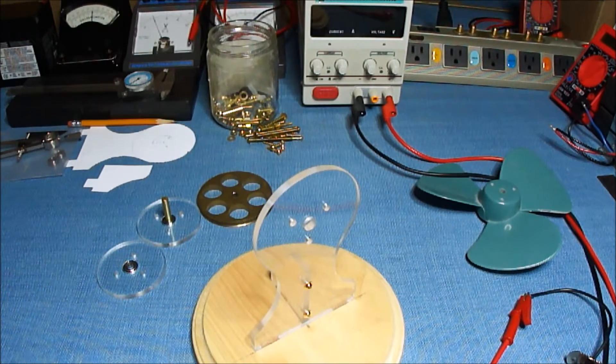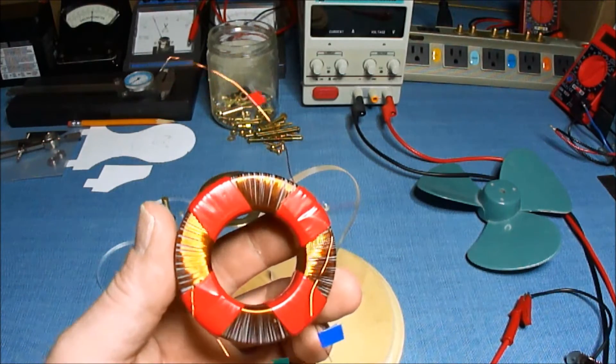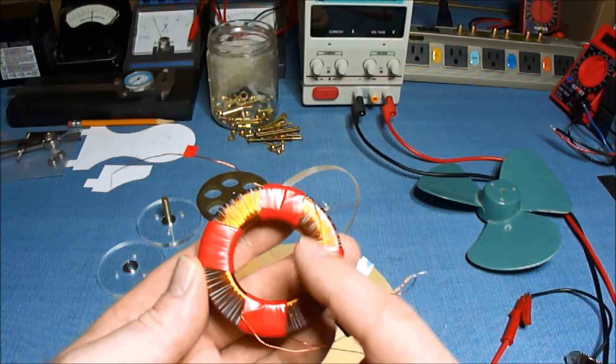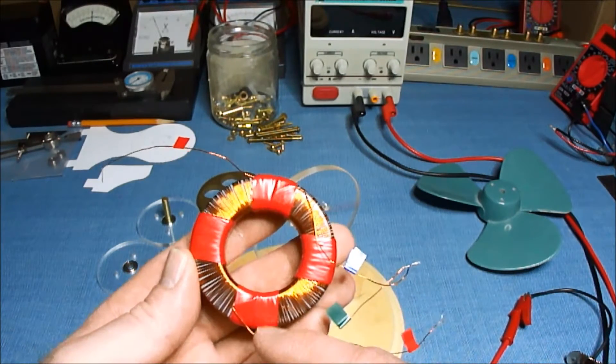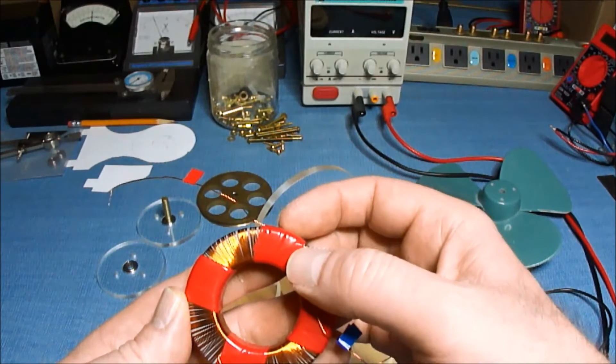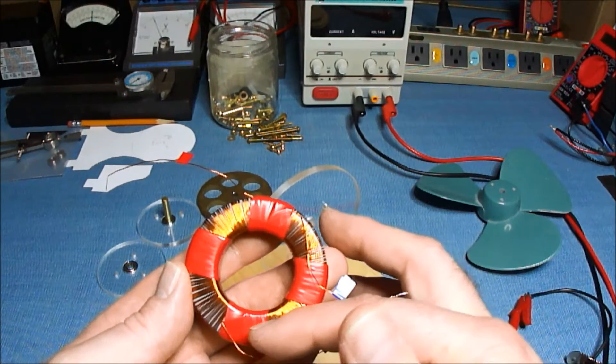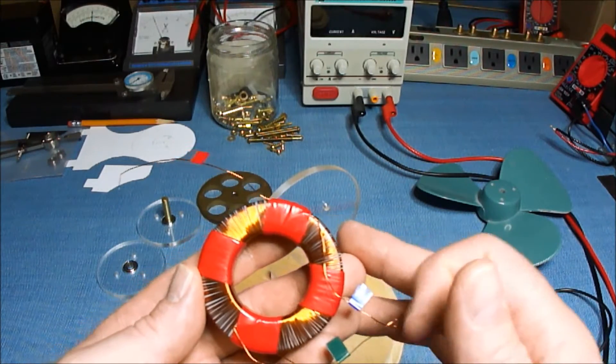What I'm using for a core is a toroid core. This is two coils, one on each half. If the adjacent wire were to continue around to the other half, it would be one continuous wrap in the same direction.